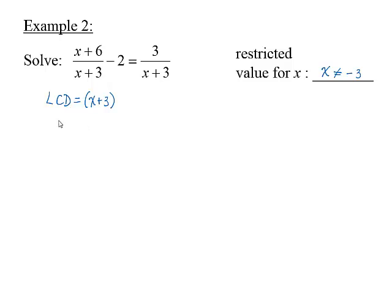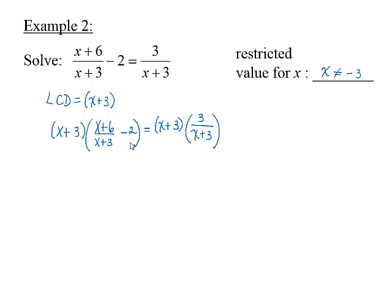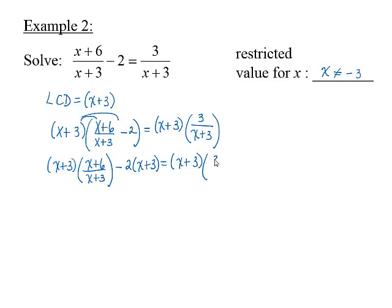Multiply each side by (x + 3). This distributes (x + 3) to each term to get (x + 3) times (x + 6)/(x + 3) minus 2 times (x + 3) equals (x + 3) times 3/(x + 3). When we simplify each product, we get x + 6 minus 2x minus 6 equals 3.